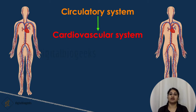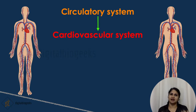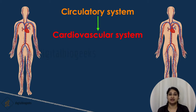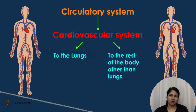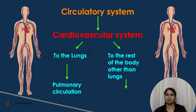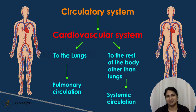The blood that circulates in our body should be oxygen-rich to nourish the cells. The lungs are the organ that helps in this activity. The heart circulates blood to the lungs to get it oxygenated, and then circulates this oxygenated blood to the whole body. That's why we need two circulations: one to the lungs, known as pulmonary circulation, and one to the rest of the body, known as systemic circulation.